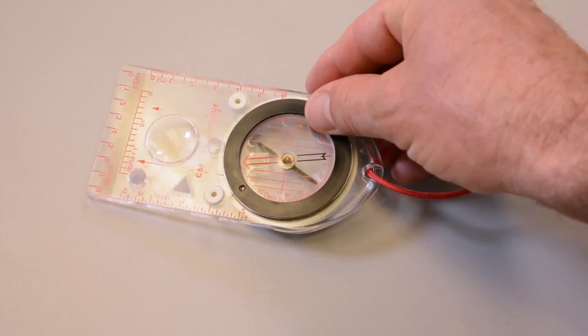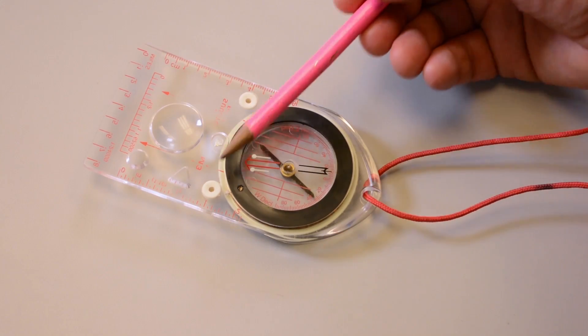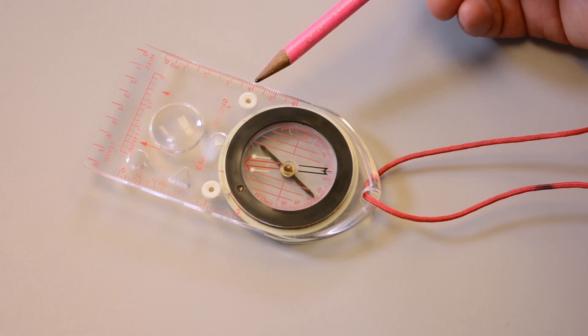Finally, on the bottom of the compass, we have a couple of small rubber feet that are helpful for holding the compass onto the map more firmly when you're making measurements.